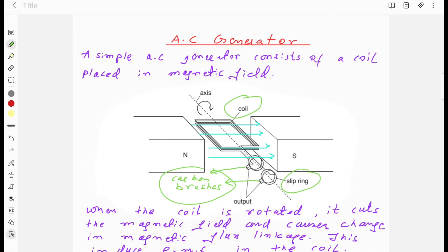When you rotate this coil in the clockwise direction, then this coil will cut magnetic field lines and this causes change in magnetic flux which induces EMF. This electromotive force will create current in the coil.